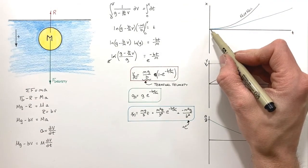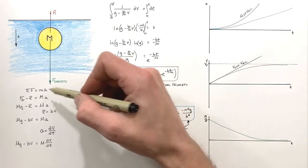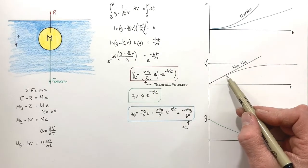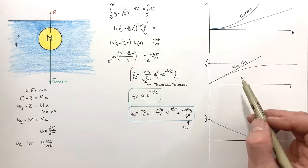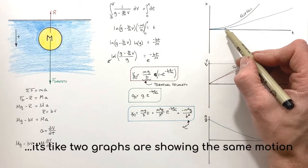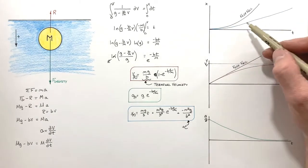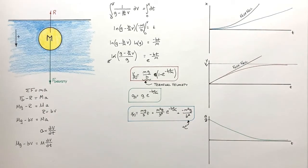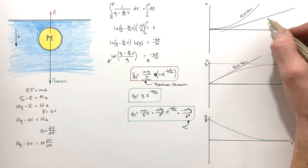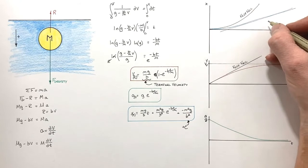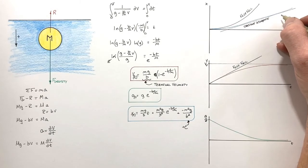At first this curve looks parabolic, just as though the ball were in free fall — mirroring what we saw with the velocity curve. But as the resistive force kicks in, those curves deviate. The position versus time graph approaches a constant slope as we near terminal velocity. This curve approaches an asymptote, but it's not vertical or horizontal — it's at an angle, what we'd call an oblique asymptote, and the slope of that oblique asymptote is the terminal velocity.